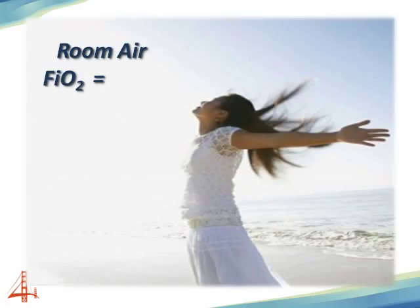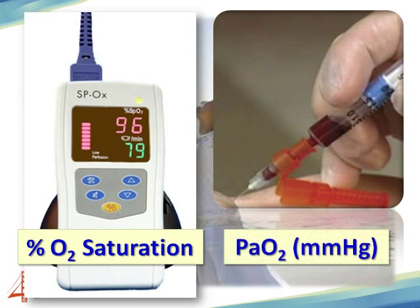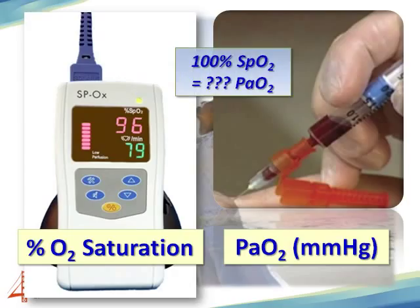We all know that when we're on the beach breathing room air, the fraction of inspired oxygen is 21%. If we were to put a pulse ox on our finger, we could quickly get an O2 sat. But what we can't so easily obtain is a PaO2 — that requires an invasive procedure, an ABG. So how does the SpO2, or O2 sat, correlate to the PaO2? And are those numbers always the same?